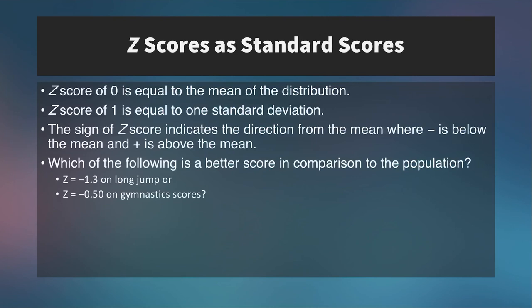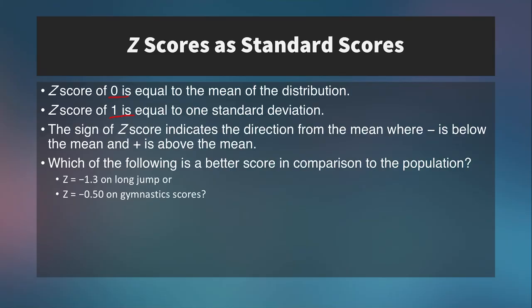Z-scores are just one type of standard score — T-scores are another. In a z-score distribution, 0 is always the mean and 1 is always the standard deviation. So even though our data set had a standard deviation of 11.5, once converted to z-scores the standard deviation becomes 1. The sign of the z-score indicates its direction from the mean: negative is below, positive is above — allowing us to compare scores from different activities using the same mean and standard deviation.